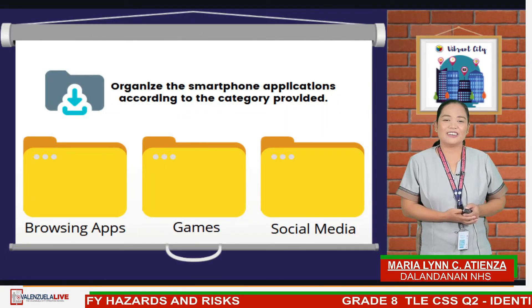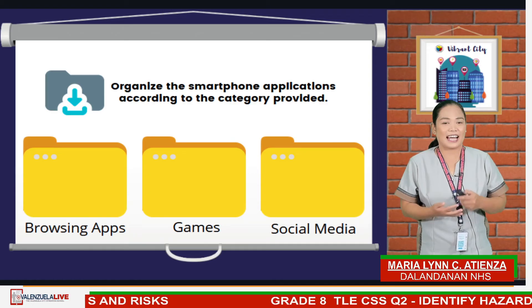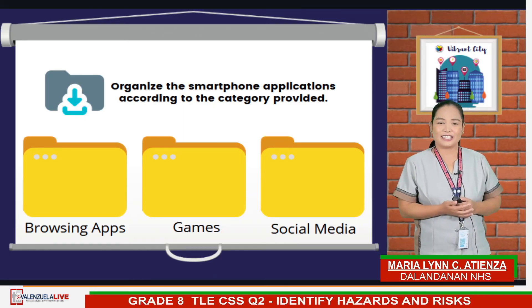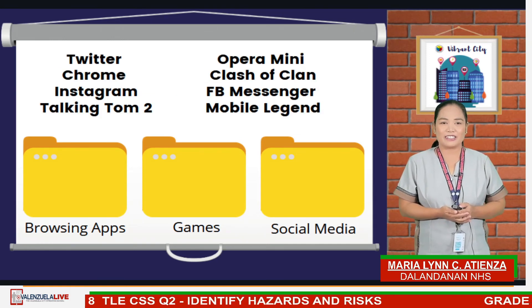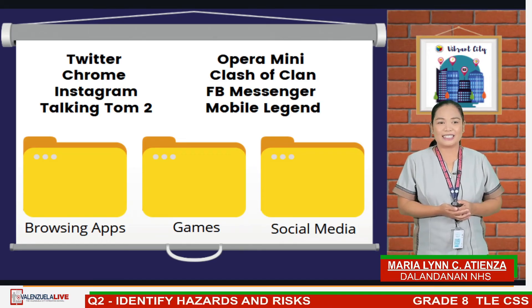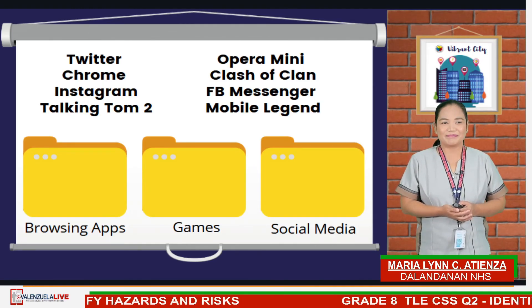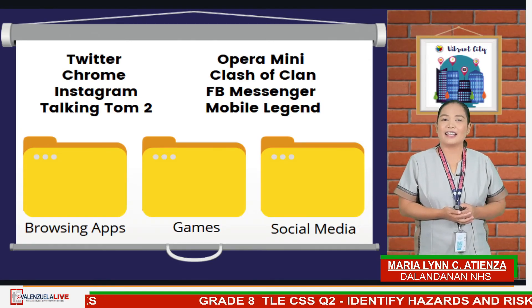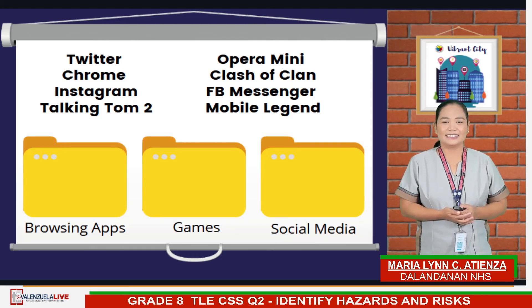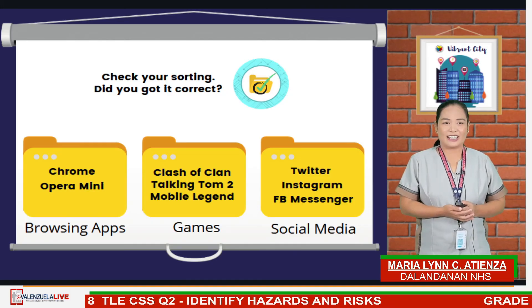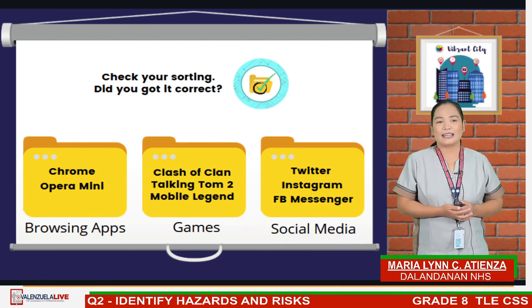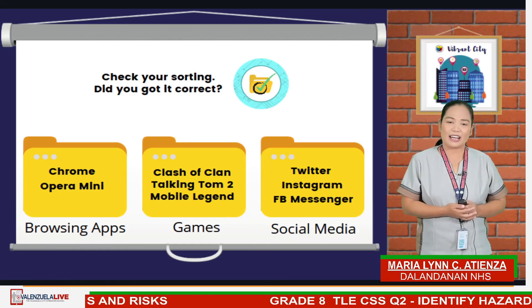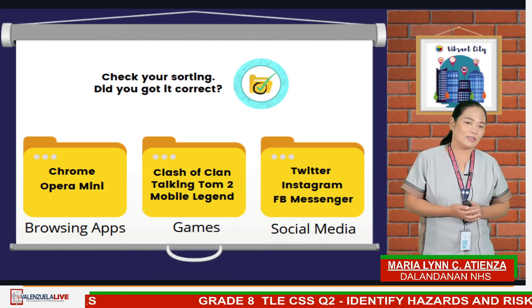Good job! Now let's do the last activity. Assume that you are going to organize the apps in your smartphone. There are three folders for different apps. Grab your pen and write your answer in your notebook. The apps are: Twitter, Chrome, Instagram, Talking Tom 2, Opera Mini, Clash of Clans, FB Messenger, and Mobile Legends. Chrome and Opera Mini are browsing apps. Clash of Clans, Talking Tom 2, and Mobile Legends are gaming apps. And Twitter, Instagram, and FB Messenger are social media apps.